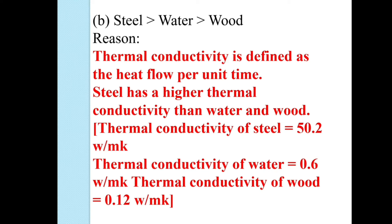Thermal conductivity is defined as the heat flow per unit time. Steel has higher thermal conductivity than water and wood. Thermal conductivity of steel: 50.2. Thermal conductivity of water: 0.6. Thermal conductivity of wood: 0.12. So, option B is the correct statement of thermal conductivity.